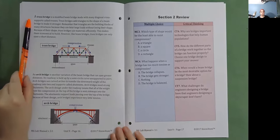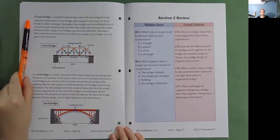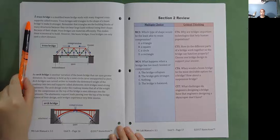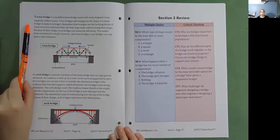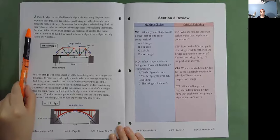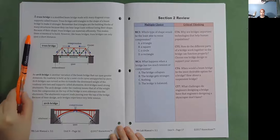A truss bridge is a modified beam bridge made with many diagonal cross supports called trusses. Truss bridges add triangles to the shape of a beam bridge to make it stronger. Remember that triangles are the building blocks of many structures because they can bear large loads without losing their shape. Because of their shape, truss bridges use materials efficiently. This makes them economical to build. However, like beam bridges, truss bridges can only span a short distance.